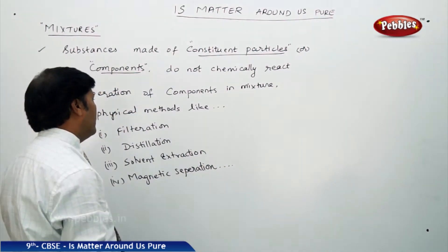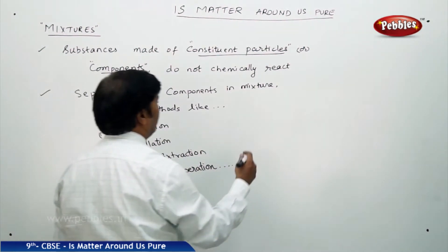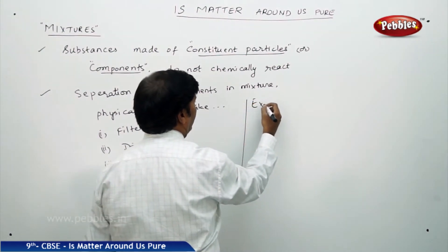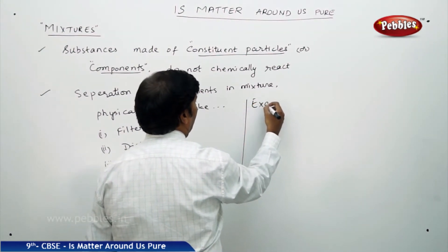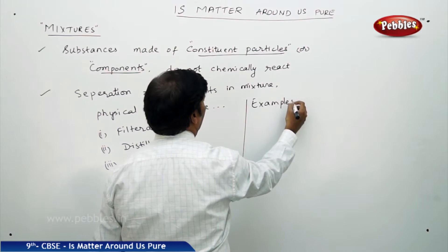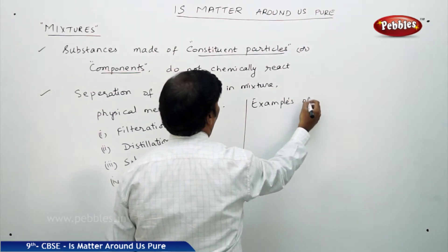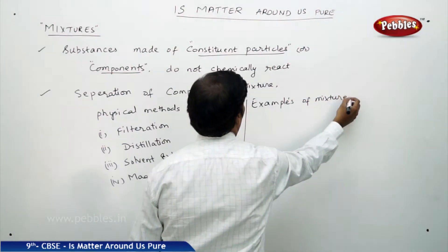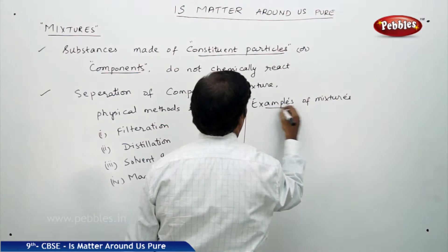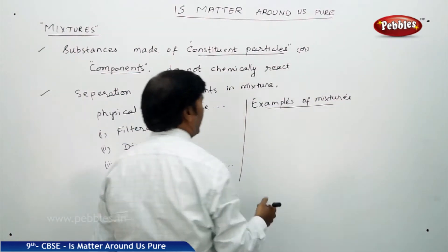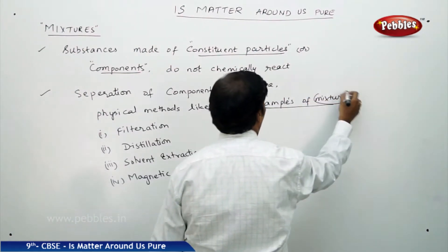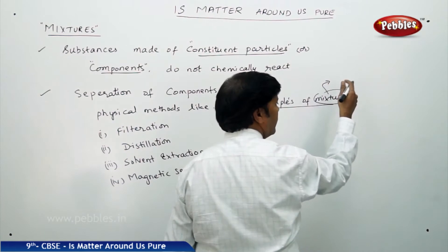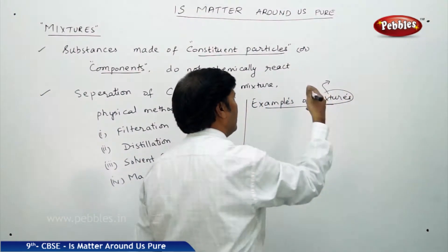If you take some examples of mixtures, actually mixtures are always heterogeneous. Mixtures can never be homogeneous — they are always heterogeneous.